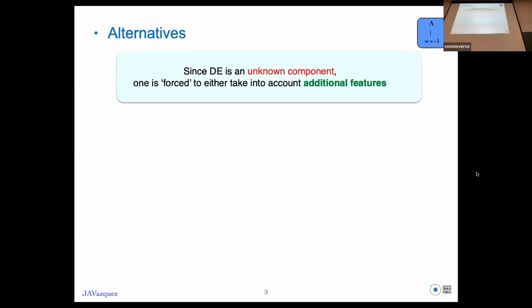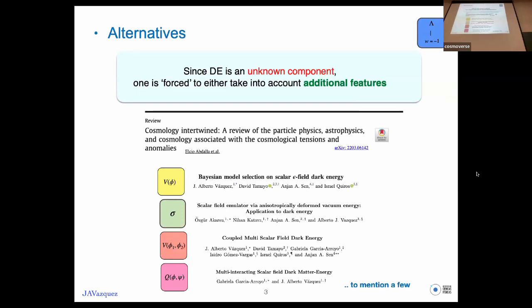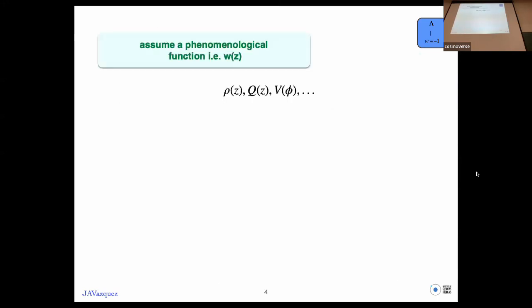We need to add these additional features because we don't know anything about this dark energy component, or we can call it modified gravity. There's a long list of possibilities for interacting dark energy models. In order to take these additional features, the simplest way is to use phenomenological functions.